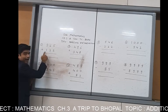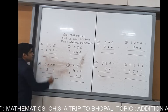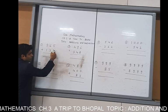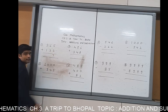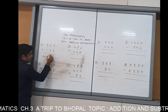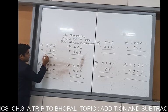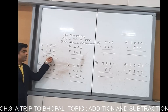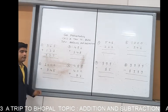First example: 865 plus 122. Listen here, one by one. 5 plus 2 is 7. 6 plus 2 is 8... wait, 6 plus 3 is 9. And 8 plus 1 is 9. Your answer is 997. So simple example.